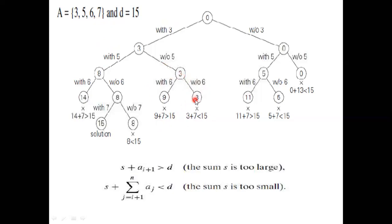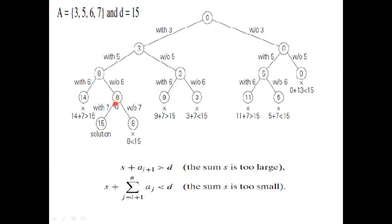Without 6, the value here is 3. Without 6, the next number is 7, so 3 plus 7 — and that is less than 15 and is the last number, so there is no chance. Going back to width to 5 which is 8, the next number after considering 5 is 6. Eight plus 6 is 14; 14 plus 7 is definitely greater than 15, so no chance there. Without 6, the same value is 8. Without 6, the next is 7: 8 plus 7 is 15. That is the solution!